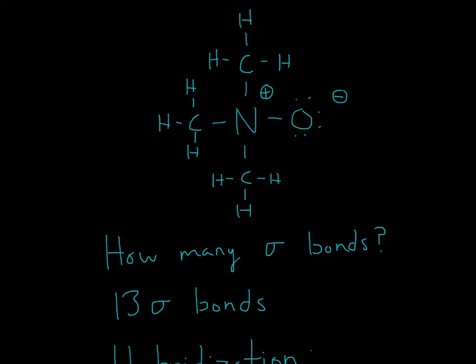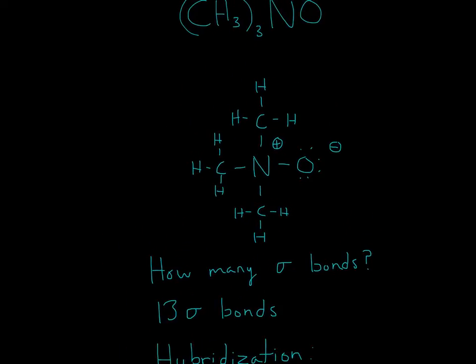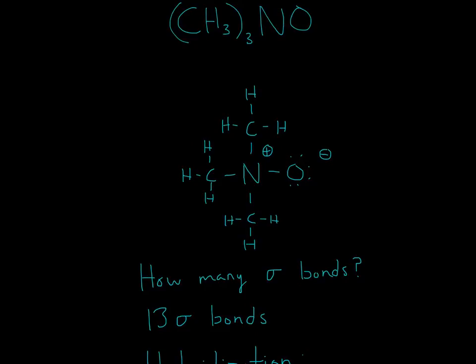Let's see how many sigma bonds there are. Sigma bonds are just single bonds, so all you're going to do is count the number of single bonds. 1, 2, 3, 4, 5, 6, 7, 8, 9, 10, 11, 12, 13. There's going to be 13 sigma bonds.